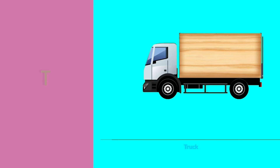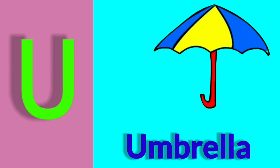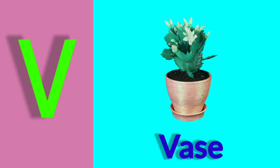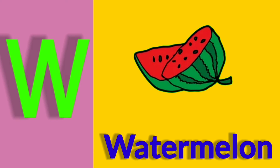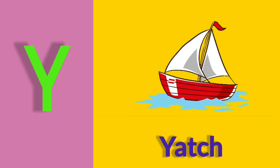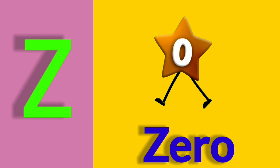S for star, T for truck, U for umbrella, V for waste, W for watermelon, X for X, Y for yard, Z for zero.